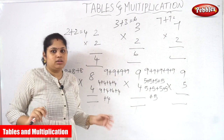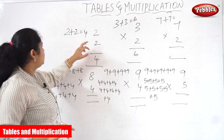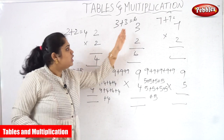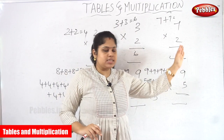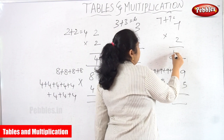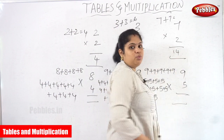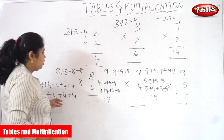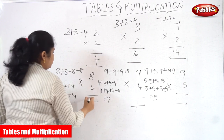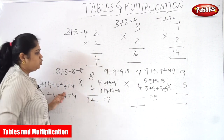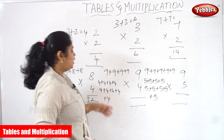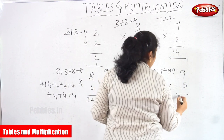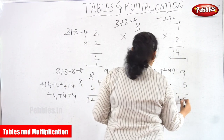So see here: 2 into 2 is equal to 4. Three into 2 is equal to 6. Seven into 2 is equal to 14. Eight into 4 is 32. Nine into 4 is 36. Nine into 5 is equal to 45.